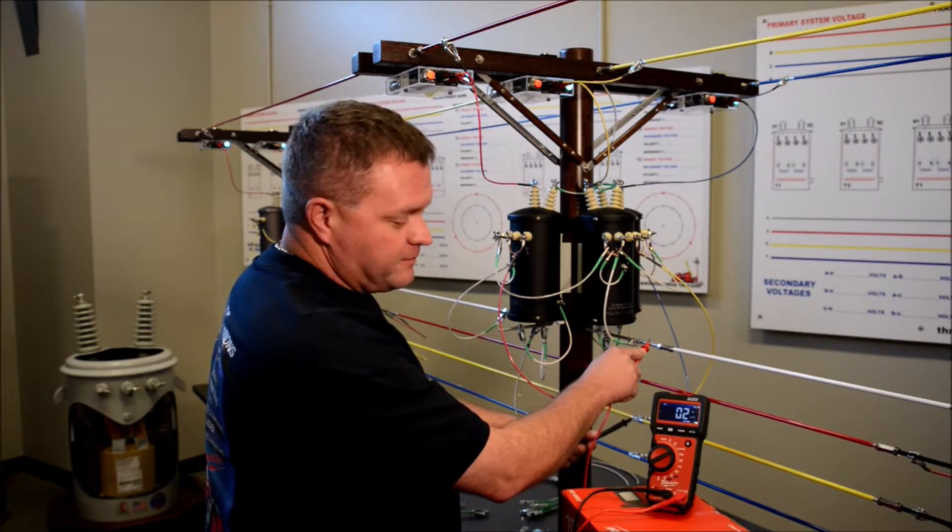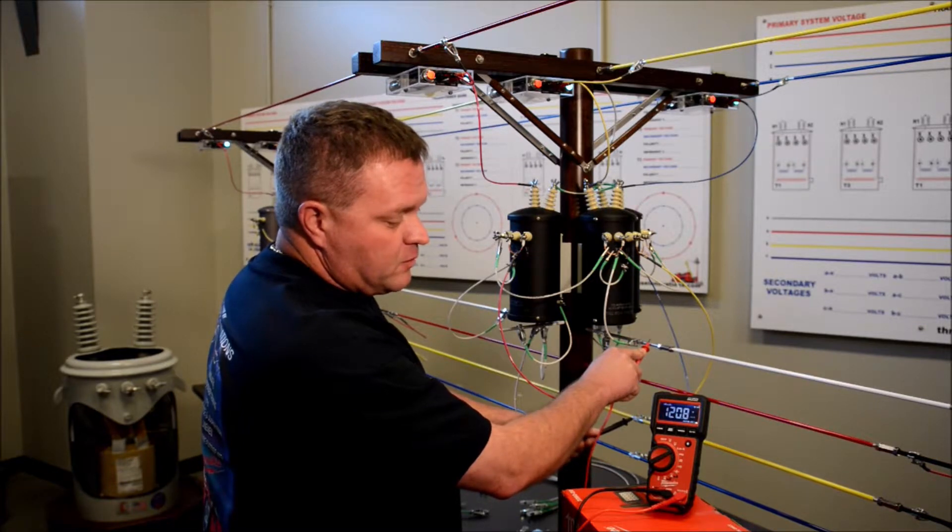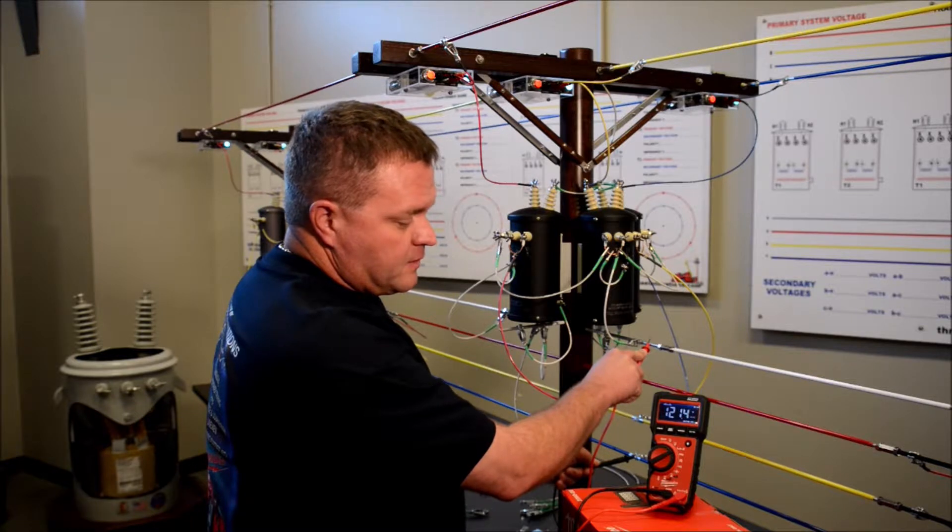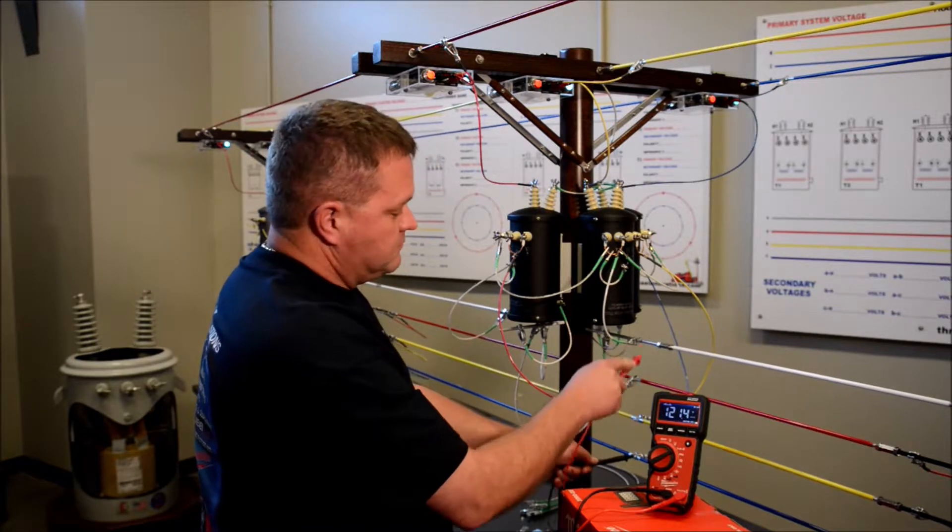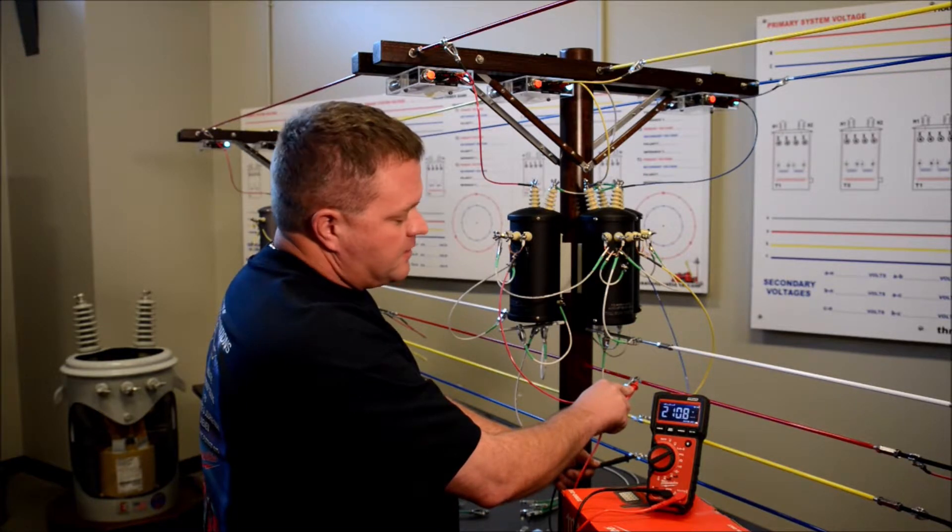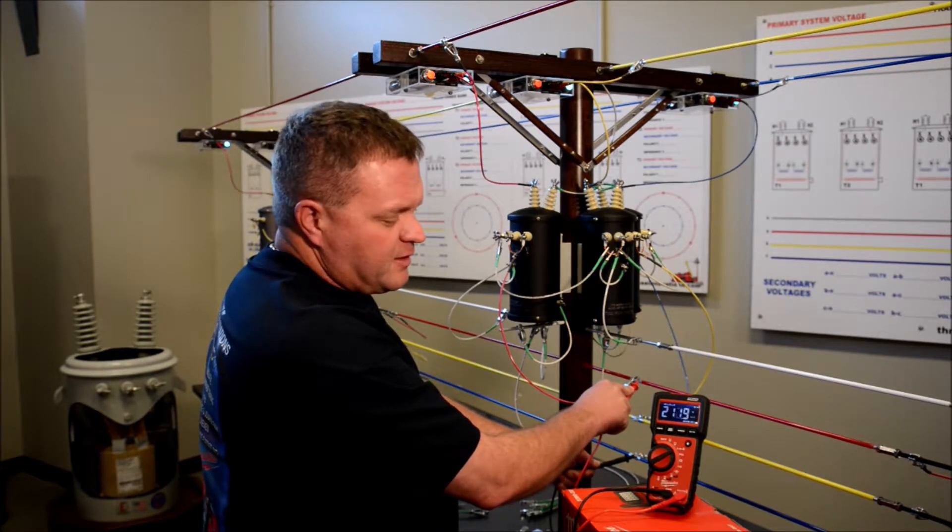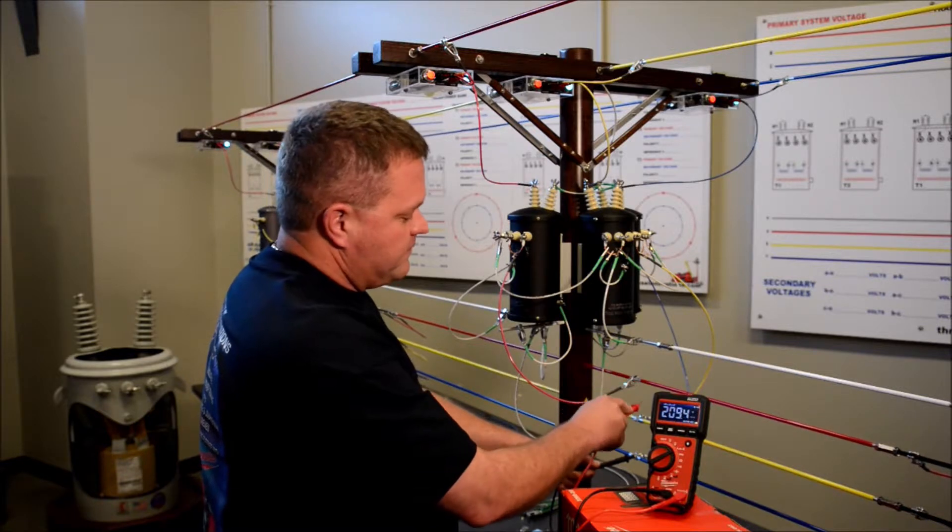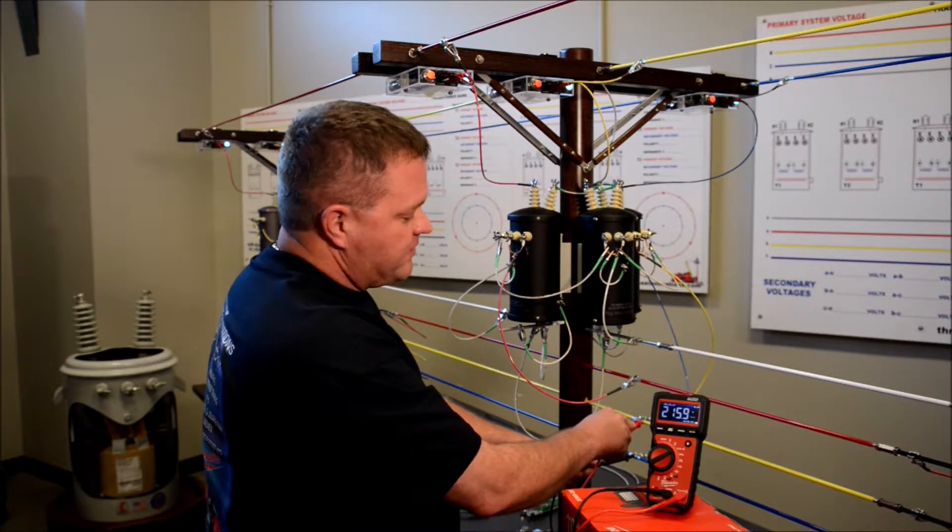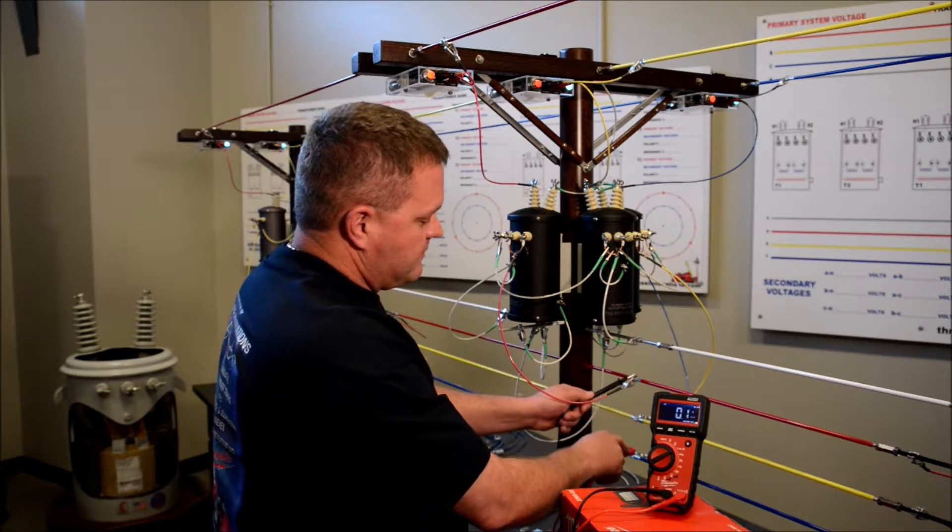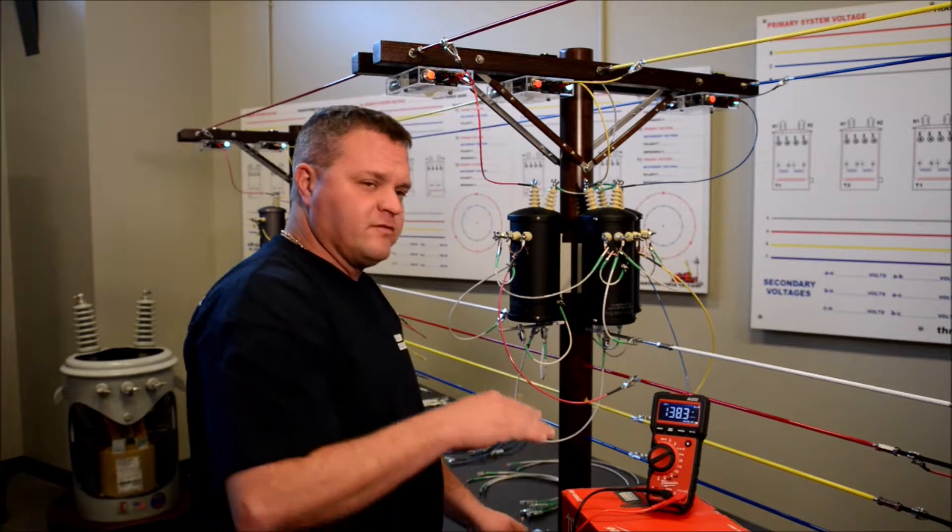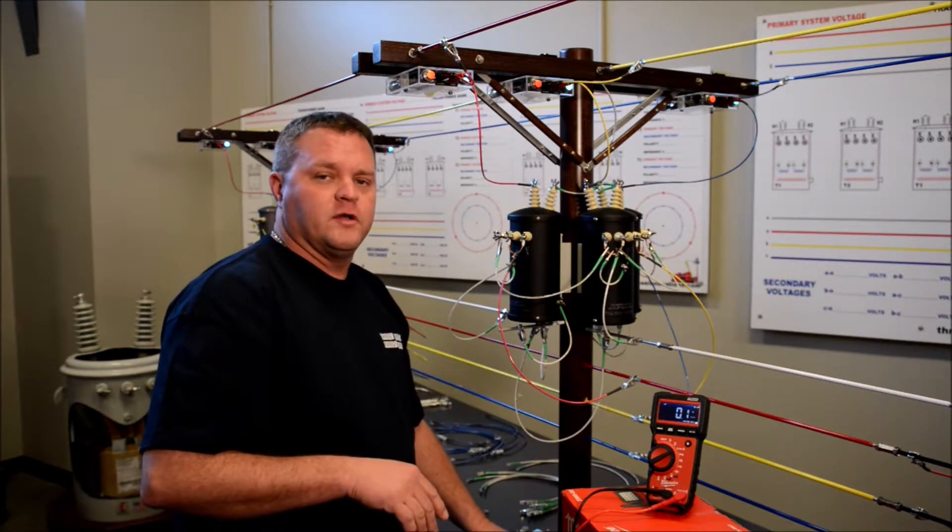124, still good. We got a little bit high voltage in the building today - 120.8, 121.4. Phase to phase, A to C is 208, right at 212. B to C, 215.